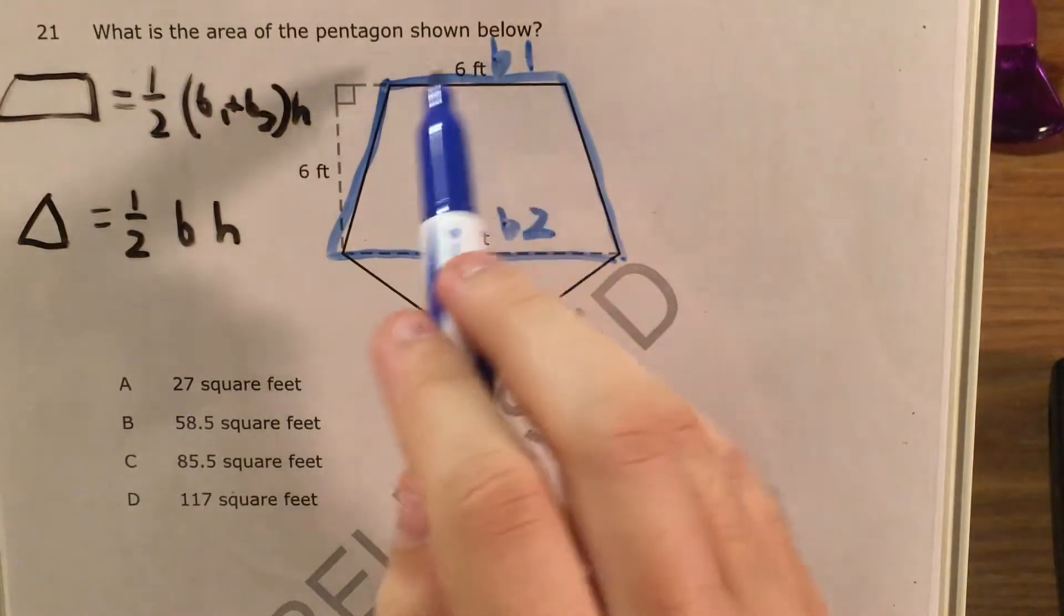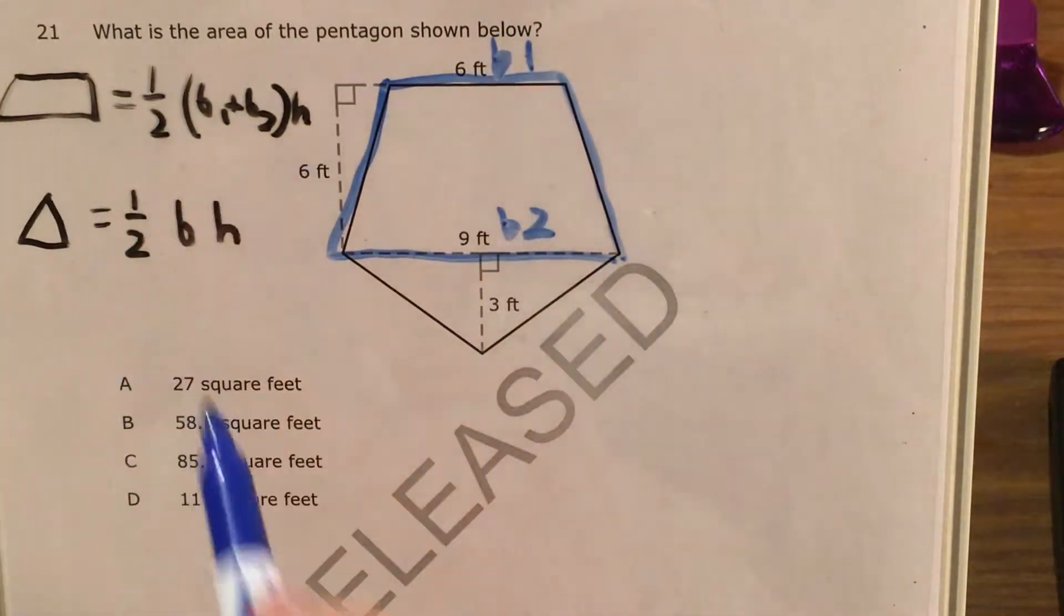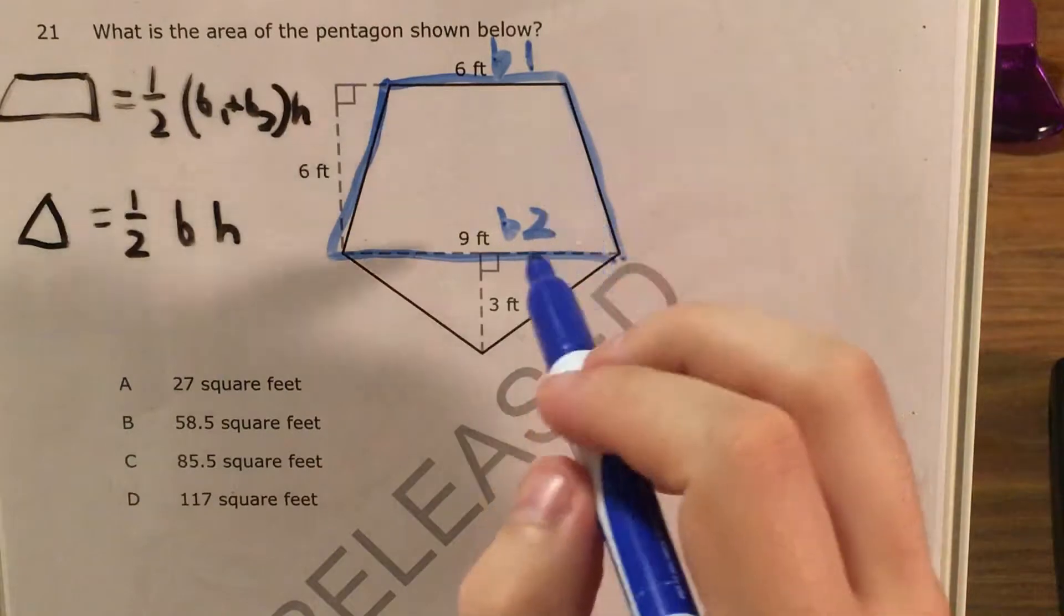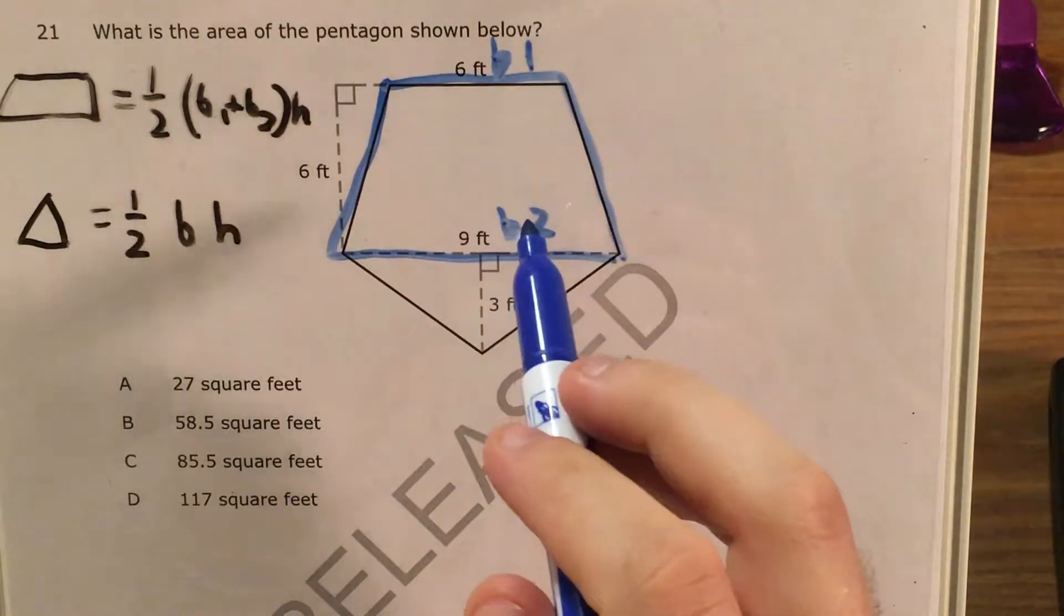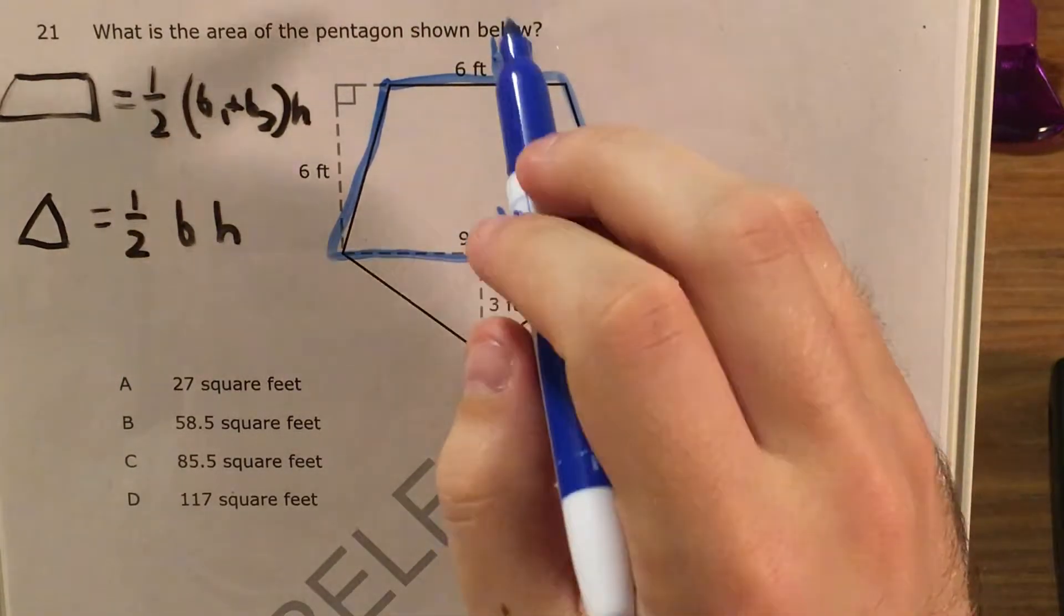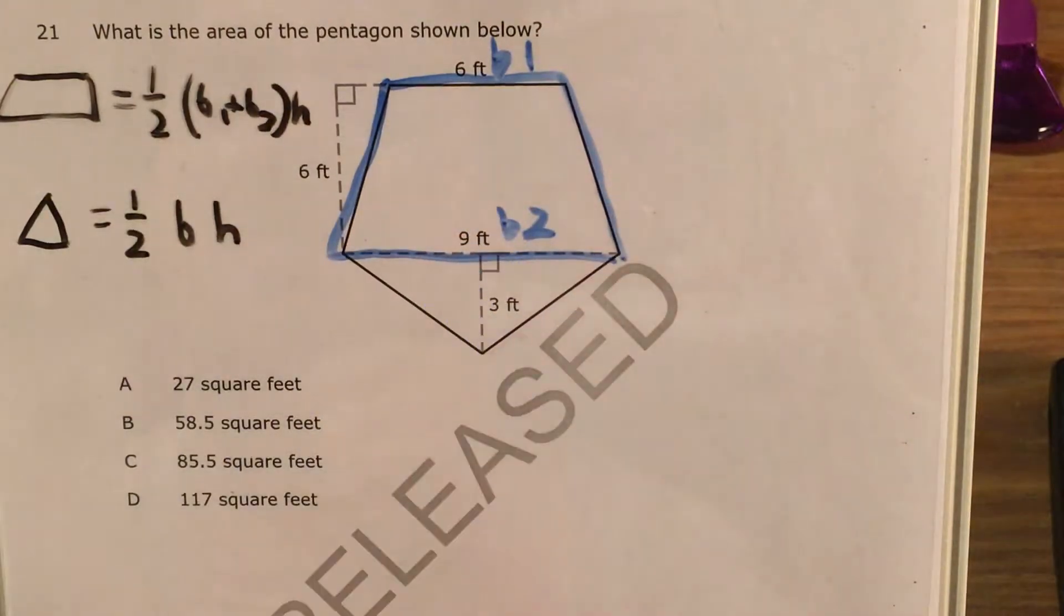It really doesn't matter since we're adding these what order we write them in, but the point is that these are the two parallel sides, the two sides that point in the same direction and are never going to touch. So base one and base two are this six-foot side and this nine-foot side.